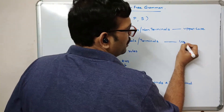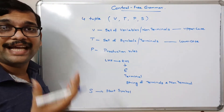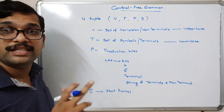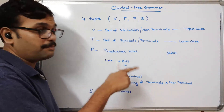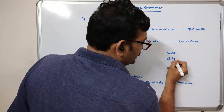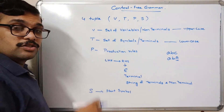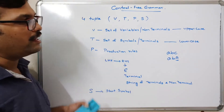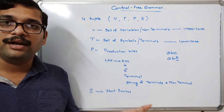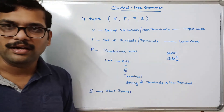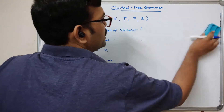Variables are represented in upper case and terminals in lower case. From the context free grammar we can derive strings which the grammar accepts. A string is a sequence of terminals only — it should not contain any non-terminal. We can construct and derive strings which the grammar accepts, and we will see one example on context free grammar.